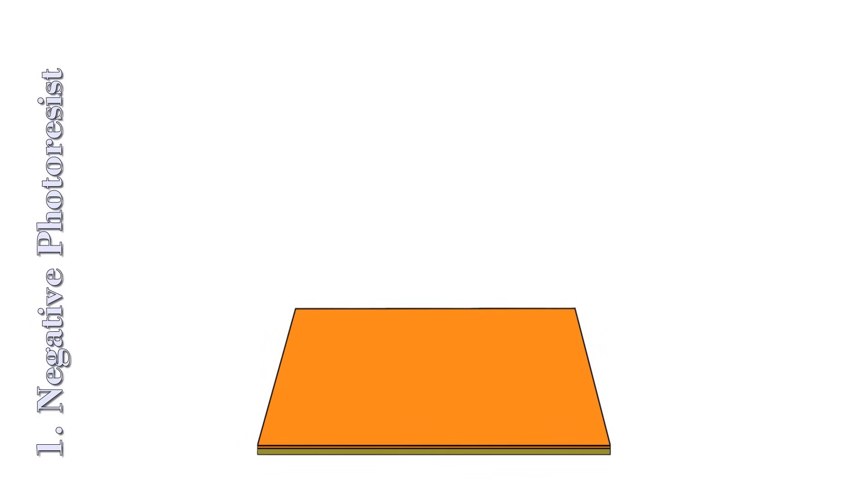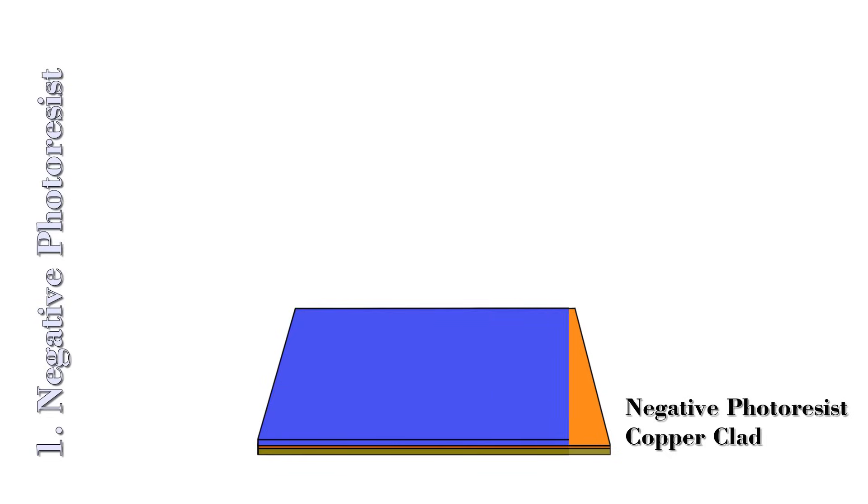Now let's explore negative photoresist and its impact on the process. Here is the view of the copper clad, the foundational material for PCB. Now we will apply the negative photoresist on the copper clad as shown in the picture. Negative photoresist will harden when it's exposed to light.